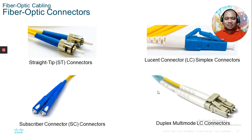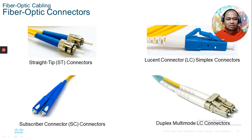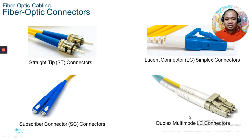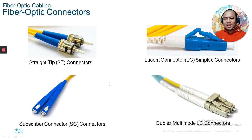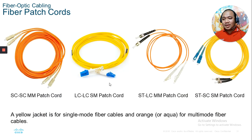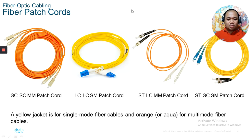Fiber optic connectors include: straight tip (ST), Lucent connector (LC), subscriber connector (SC), simplex connector, and duplex multi-mode connector. Unlike UTP and STP which only use RJ45, fiber optics has four types of connectors. A yellow jacket indicates single-mode fiber cable, while orange or aqua indicates multi-mode fiber cable.